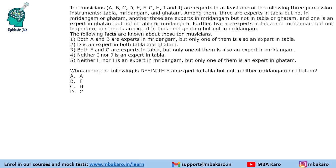It says there are 10 musicians A to J. They are expert in at least one of the following 3 percussion instruments: tabla, mridangam, and ghatam. Among them, 3 are experts in tabla but not in mridangam or ghatam, another 3 experts in mridangam, and so on. We are given the different regions — how many are expert in which kind of instruments — and then we are given the facts where we are told who is expert in which.